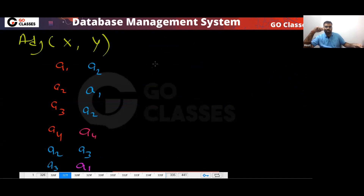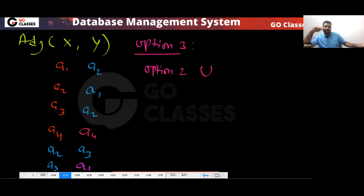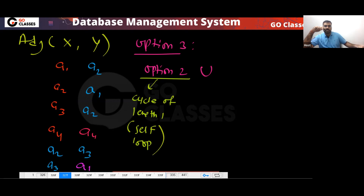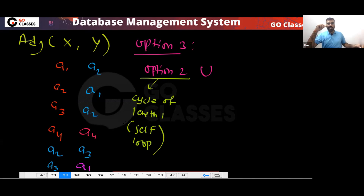The query for option B — select where X equals Y, project X — gives you cycles of length one, i.e., self-loops. Now we need to also write a query for cycles of length two to union them together.